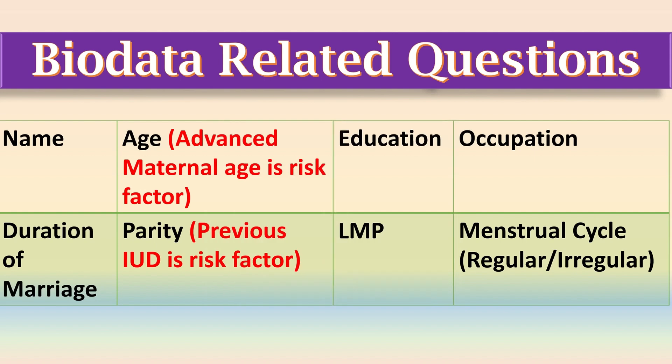Ask about the name of the patient, the age — because advanced maternal age is a risk factor — education, occupation, duration of marriage, parity — because previous IUFD is a risk factor — last menstrual period, and menstrual regularity.